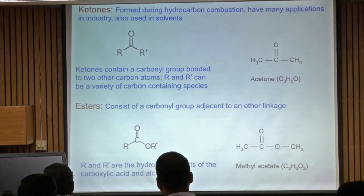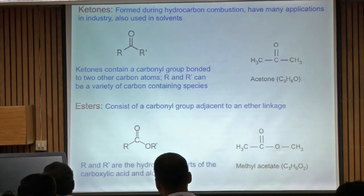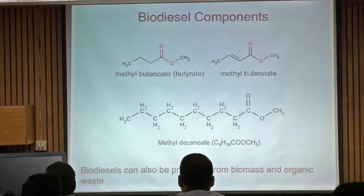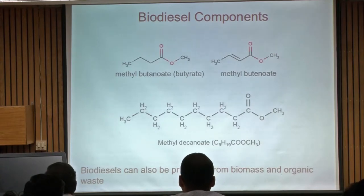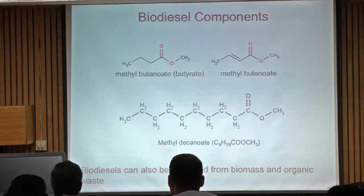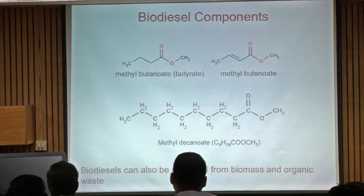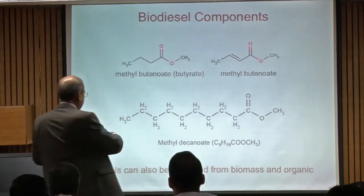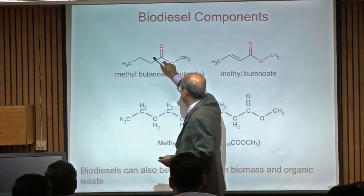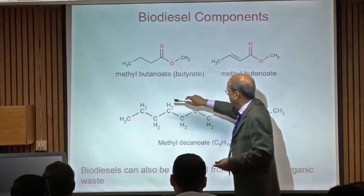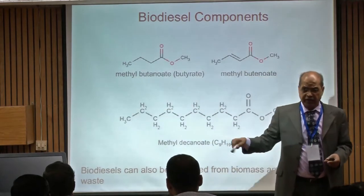There are biodiesel components made from vegetable or other sources. Each has a hydrocarbon part and an ester part. For example, butanol has one, two, three, four carbons — if you make decanol, instead of four carbons on the left it will have ten. Biodiesels can be saturated or unsaturated, having one or two double bonds, and the presence of double bonds strongly modifies the dominant chemical reactions and combustion behavior, including ignition.